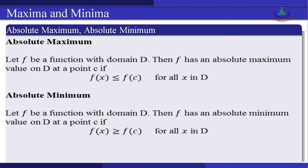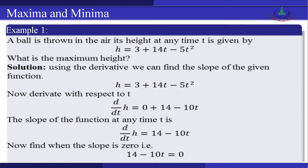Now we look at the definitions of absolute maximum and absolute minimum. Absolute maximum: let f be a function with domain D. If f(x) ≤ f(c) for all x in the domain D, then f has an absolute maximum at c. Absolute minimum: let f be a function with domain D. Then f has an absolute minimum value on D at a point c if f(x) ≥ f(c) for all x in the domain D.